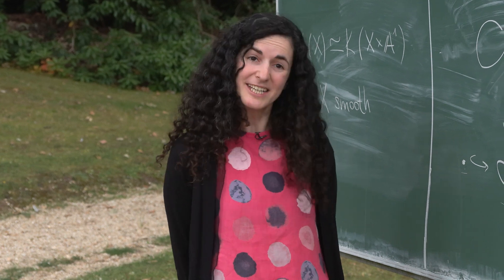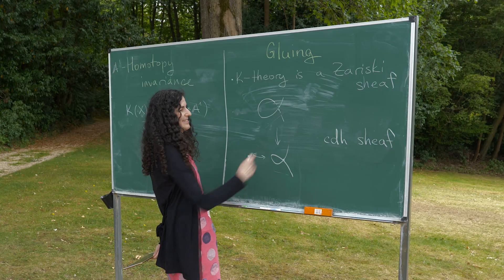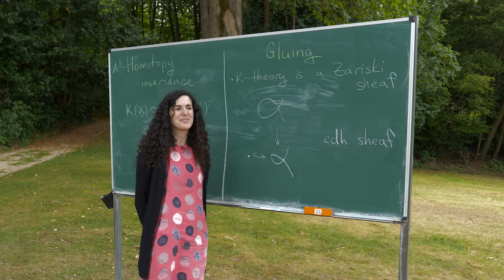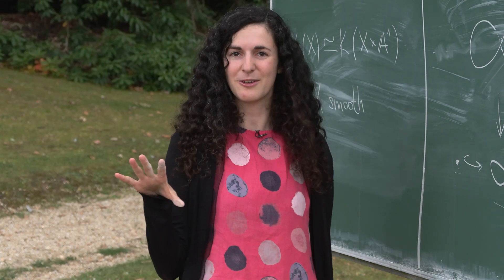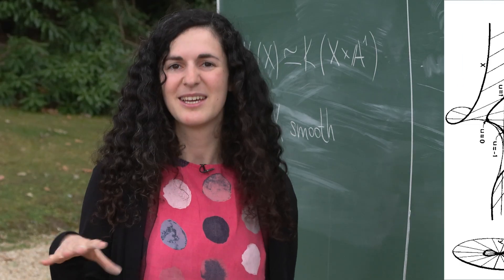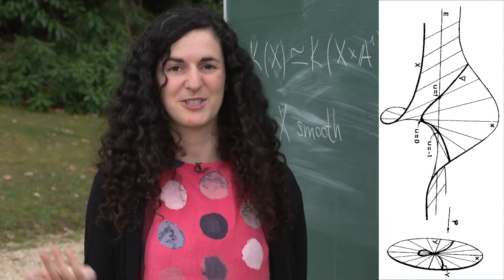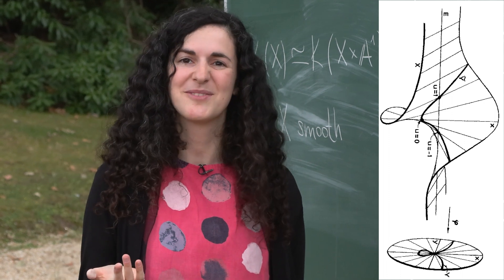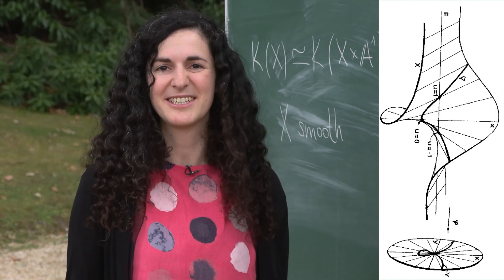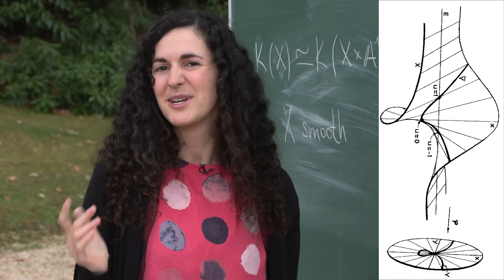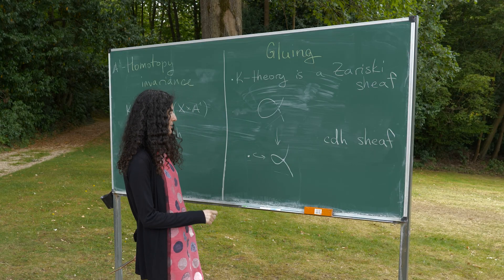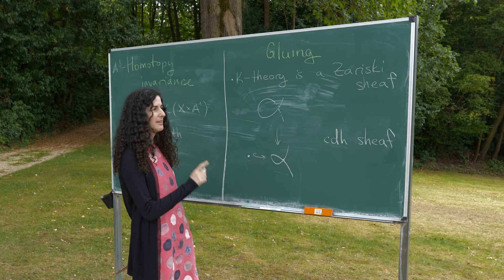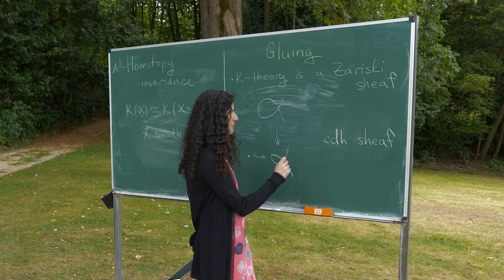This would be an instance of a more general property called being a CDH sheaf. A typical cover of a singular variety in this generalized CDH topology is given by taking the singular locus of a variety and its blob, which is a beautiful geometric construction that allows one to get rid of the singularities or make them less singular. However, the truth is that K-Theory is not quite a CDH sheaf.